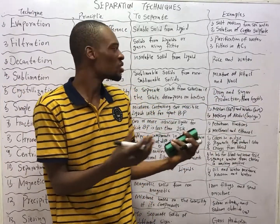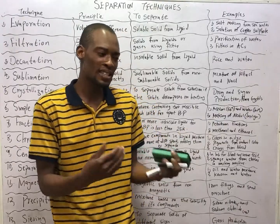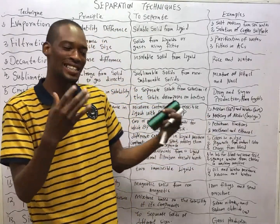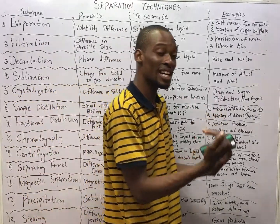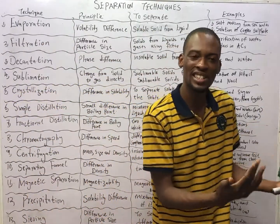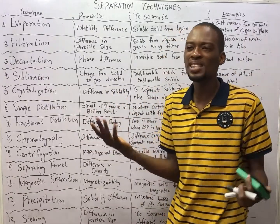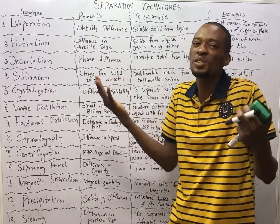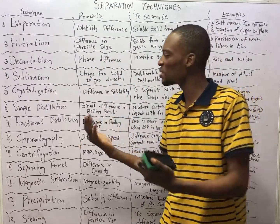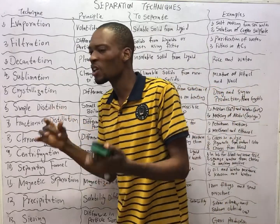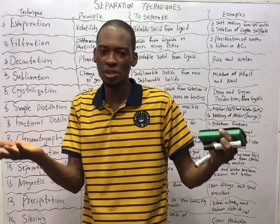Meanwhile, mixtures are physically combined. For example, air is a mixture. Air contains nitrogen, oxygen, carbon dioxide, argon, impurities, and dissolved gases. That is a mixture, and all these components are visible in a mixture.